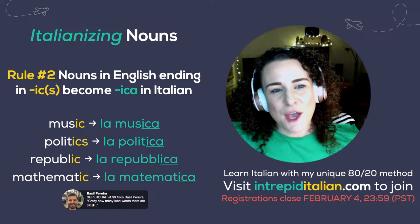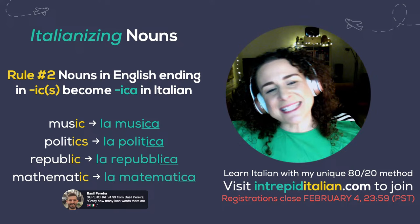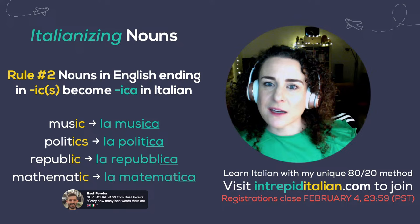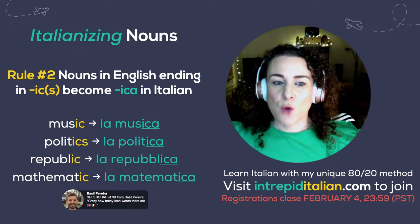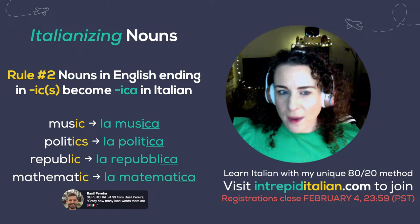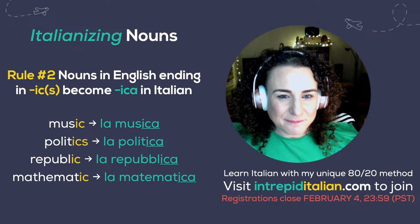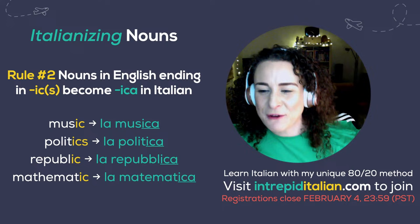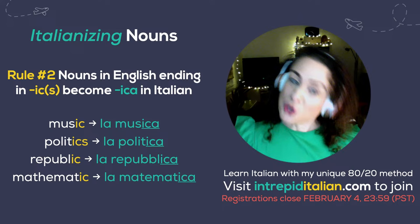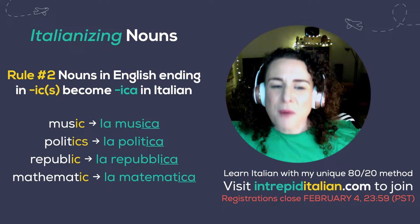Rule number two: many nouns in English ending in IC or ICS become ICA in Italian. For example, music becomes 'la musica,' politics becomes 'la politica,' republic becomes 'la repubblica,' mathematics becomes 'la matematica.' This is another way you can take English words and transform them into Italian. If you've learned this before, I'd be super curious to know if you've used and applied it. This is what today is all about — reminding you that these little shortcuts in the language exist and this is how I like to approach teaching Italian.